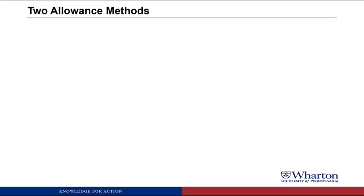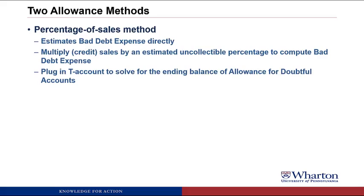There are two basic methods that are used to calculate the amount of uncollectible accounts. I know accounting almost seems like Noah's Ark where there has to be two of everything. The first method is called the percentage of sales method.